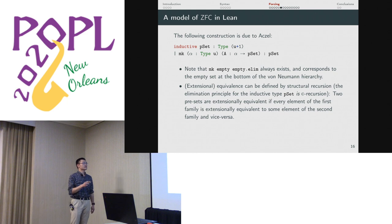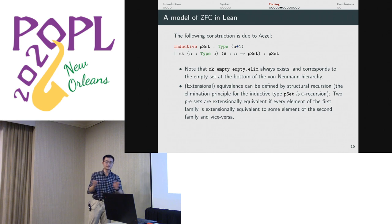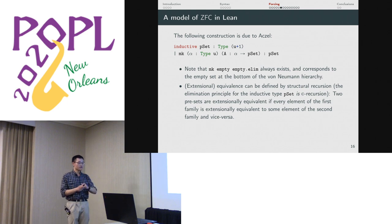So this is due to Aczel. It's very simple. One constructor, two fields. There's a type which indexes a family of P sets. You can think of this as being an inductive type of trees of trees formed from a universe of types. You can define a notion of equivalence through structural recursion. These are presets because you still have to quotient by that equivalence. But once you do, you have a model of ZFC. You can show that that's a model of ZFC.